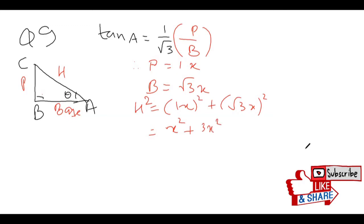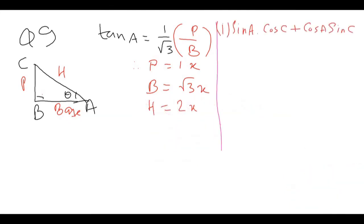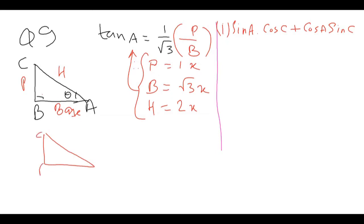We got hypotenuse as 2x. The question asks us to find sin A · cos C + cos A · sin C. We can find sin A and cos A from angle A, but we also need cos C and sin C, so let's figure those out.